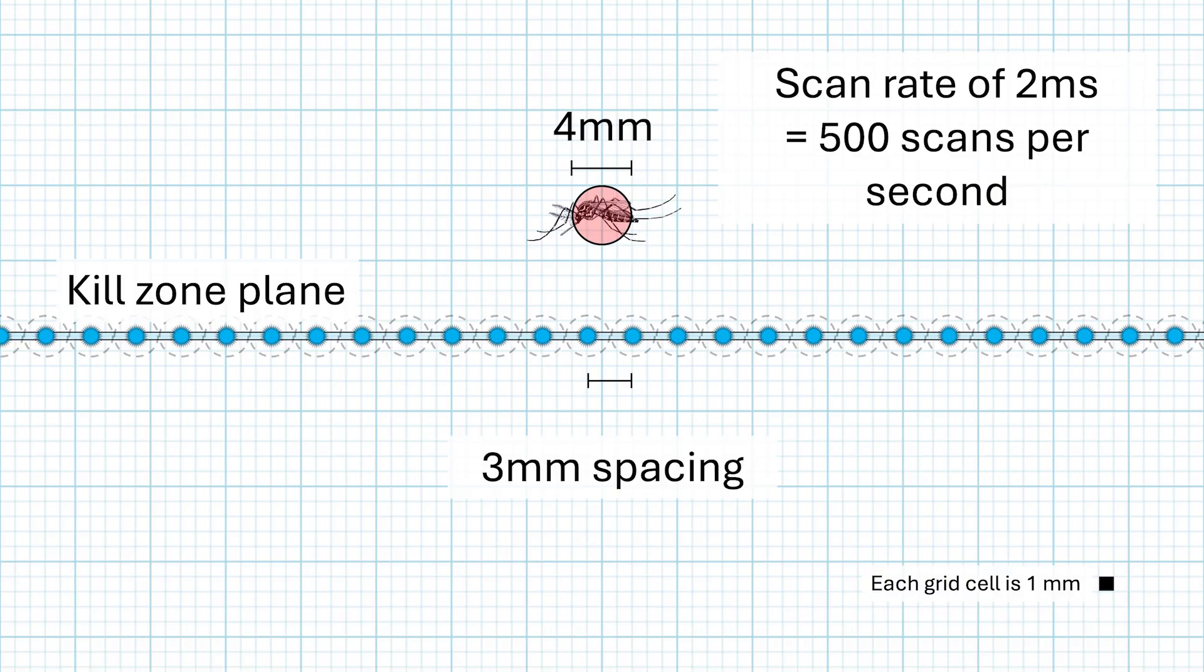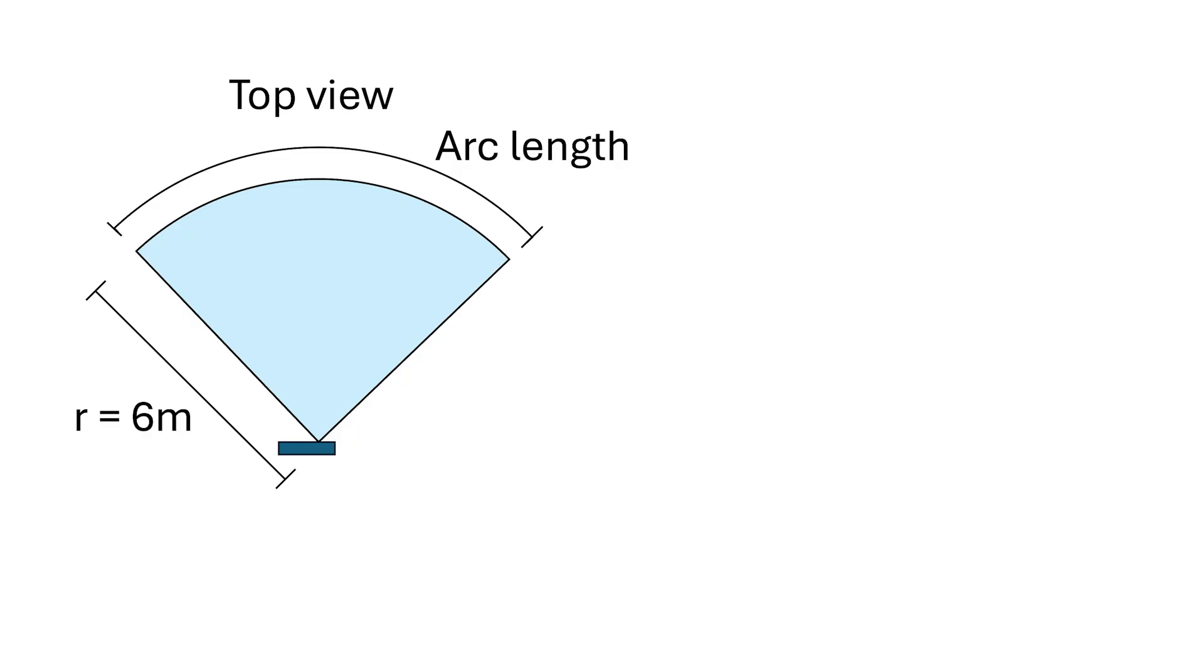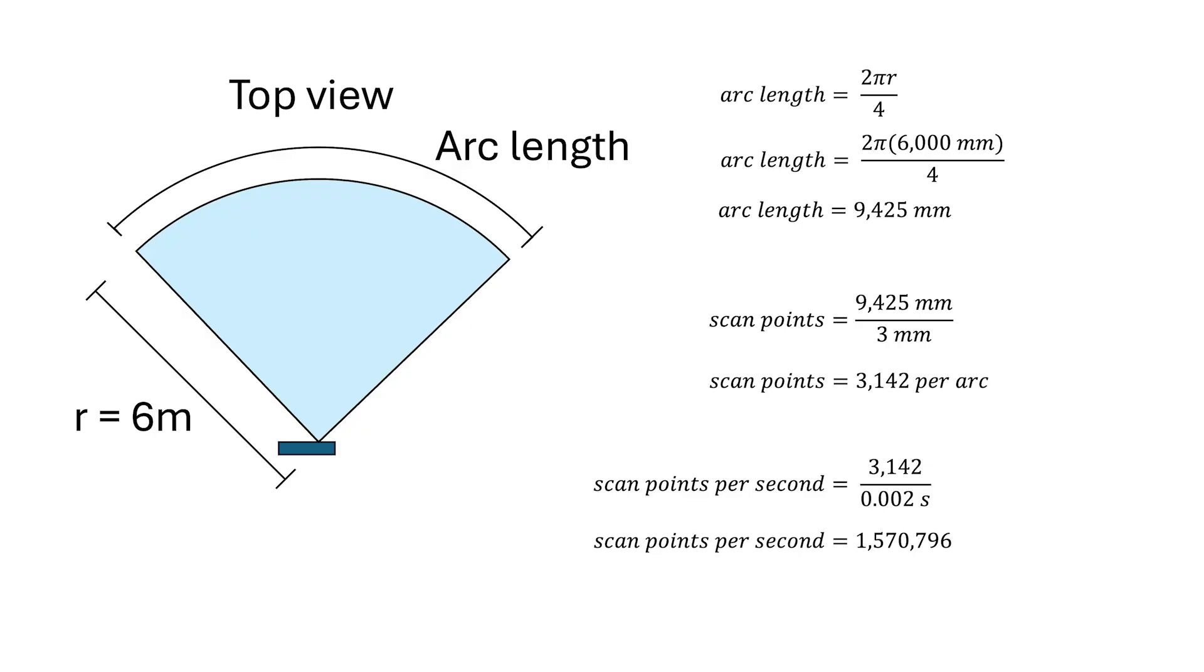Let's do the math on how many points this is for the 90-degree scanning angle at 6 meters away, which is the hardest scenario for the system. Here's the top-down view of the kill plane, and we need to know what the arc length is. We have radius of 6 meters, so the full circumference is 2 pi r, and since we want the length of a quarter of the circumference, we divide by 4. So the length of the arc is about 9,000 millimeters. And with our assumption that we need to scan every 3 millimeters, that means that there are about 3,000 points that need to be checked. And every set of points need to be checked once every 2 milliseconds, so that's about 1.57 million points that need to be checked every second.